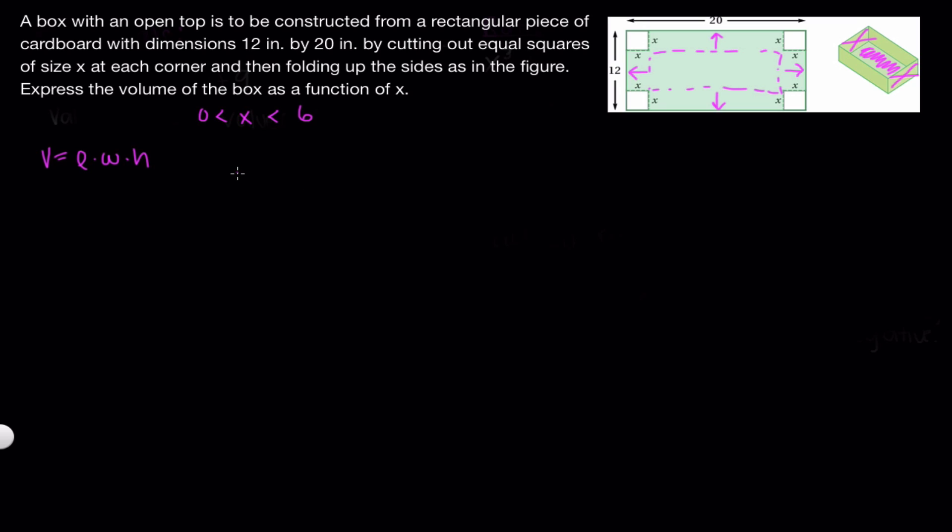Now we have to put everything in terms of x. So first we can do the length. And looking at our picture, the length of our box will be this side, and this is represented here by this part. We can see that this and this will be folded up and will not be included in the length of our box. And since we know that this is x and this is x and this total length is 20, we can see that from here to here, this length is going to be 20 minus 2x.